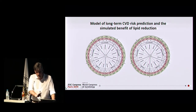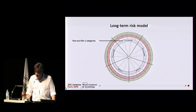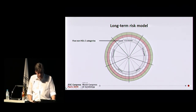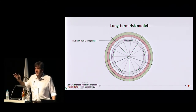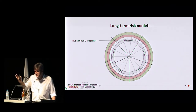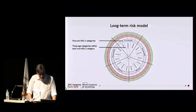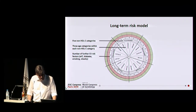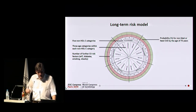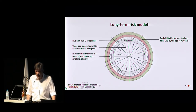Taking advantage of this approach, similar to the app we are developing for acute coronary syndrome, we are currently developing a population-based risk app. You enter your blood cholesterol level, your age group, and the number of further cardiovascular risk factors. And then you have the probability for non-fatal or fatal cardiovascular disease at the age of 75.